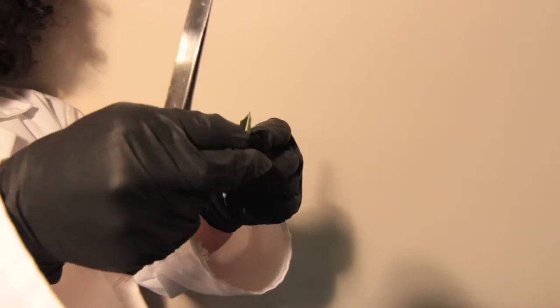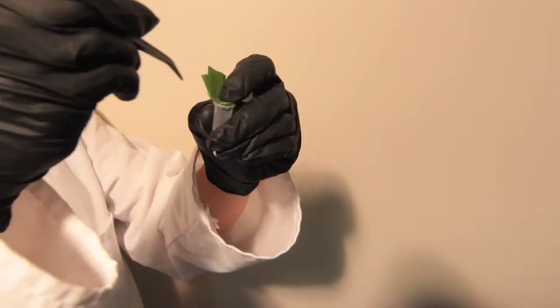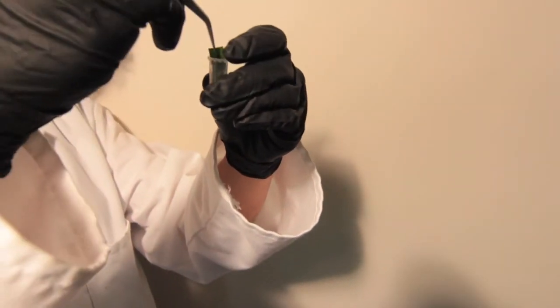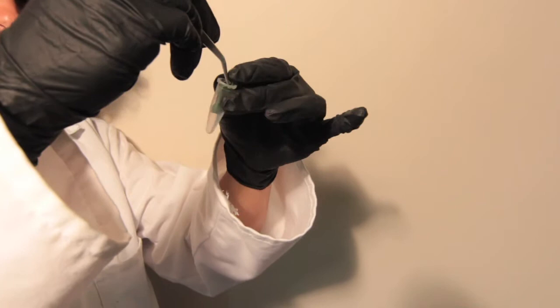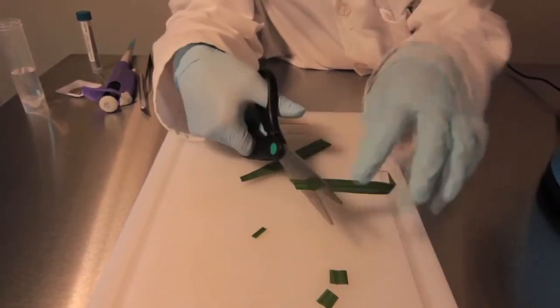One of the issues you may run into when preparing your samples for homogenization in the Bullet Blender is the low density of plant material. A small mass of sample may take up a lot of room inside of a tube. For this reason, it's best to keep your samples small.